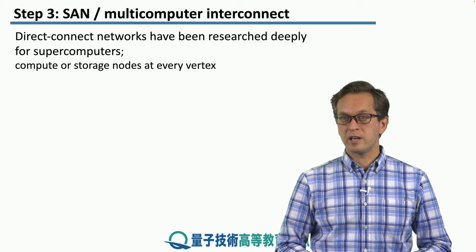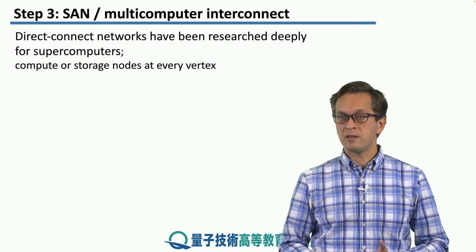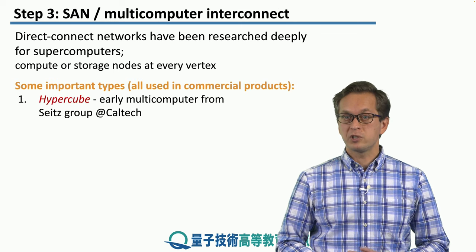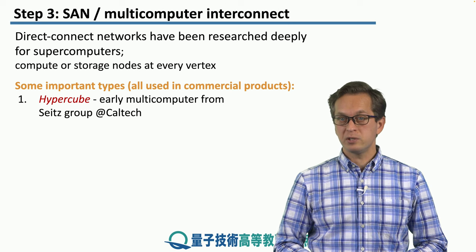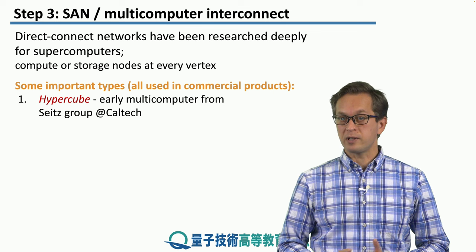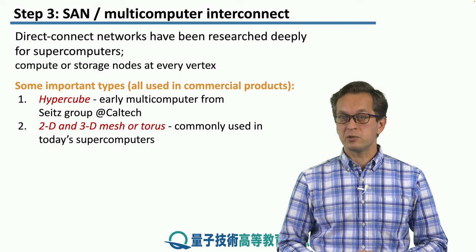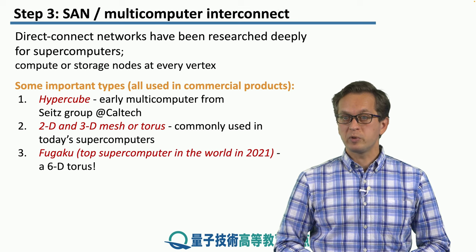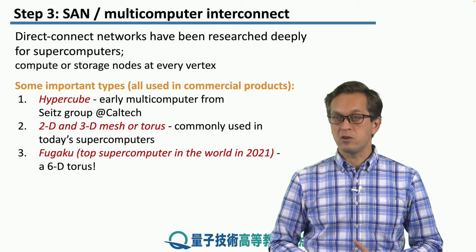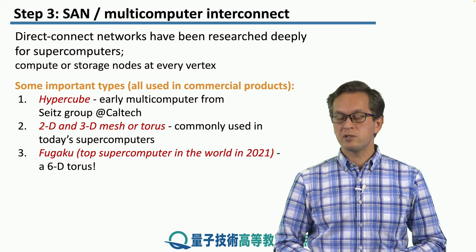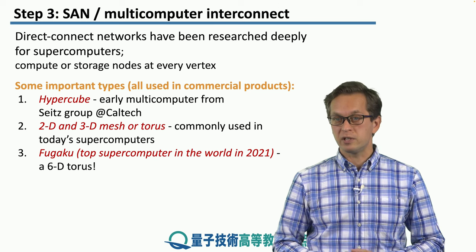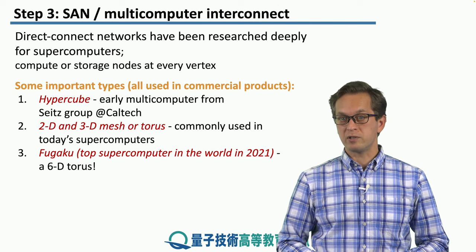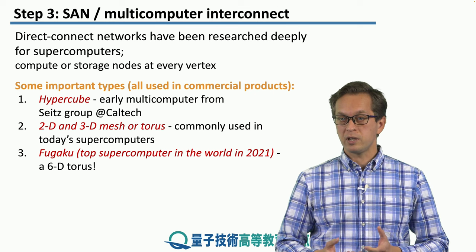Such direct-connect networks have been researched deeply for supercomputers, with computer storage nodes at every vertex. Important types used in commercial products include hypercube topologies, used in early multi-computers at Caltech; 2D and 3D mesh or torus, commonly used in today's supercomputers; and the Fugaku — the top supercomputer in the world as of 2021 — which uses a 6D torus. Here, 6D refers to how many degrees or nearest neighbors each vertex has. Imagine placing a BSA at every link between nearest neighbors — that's a huge number of components that all have to work together.